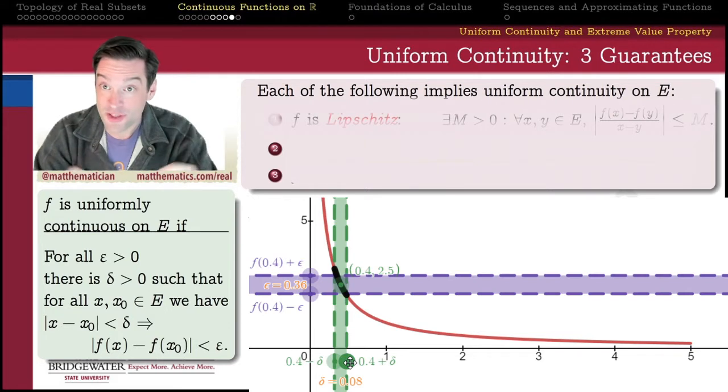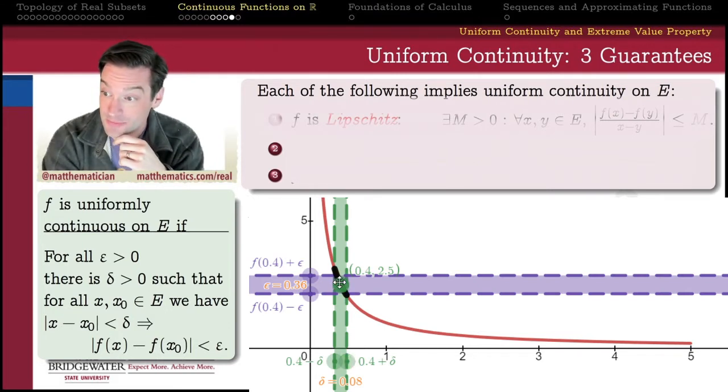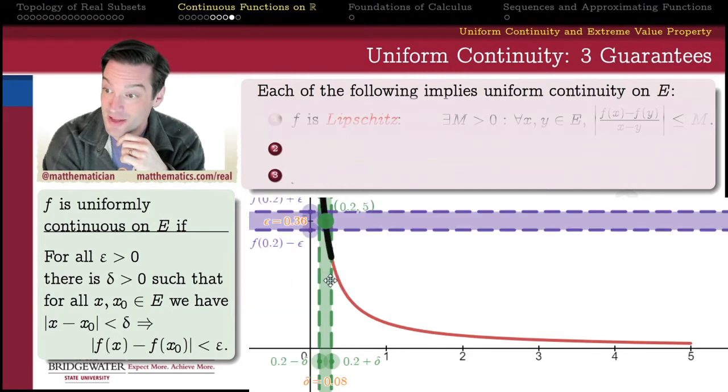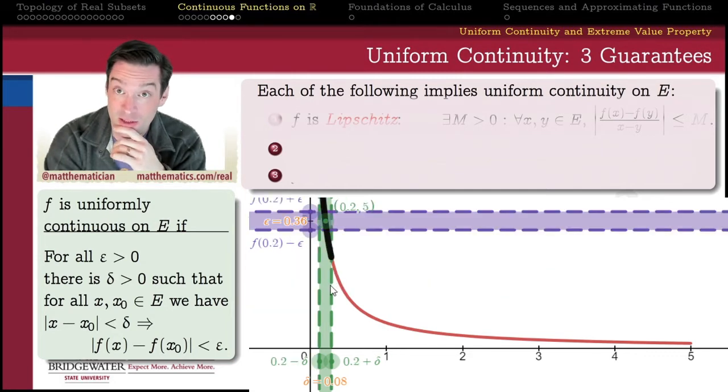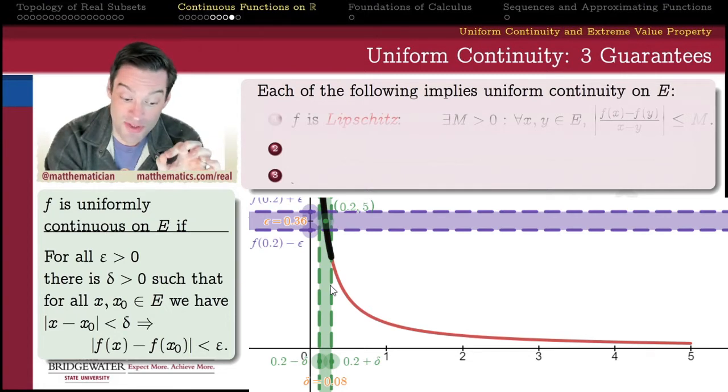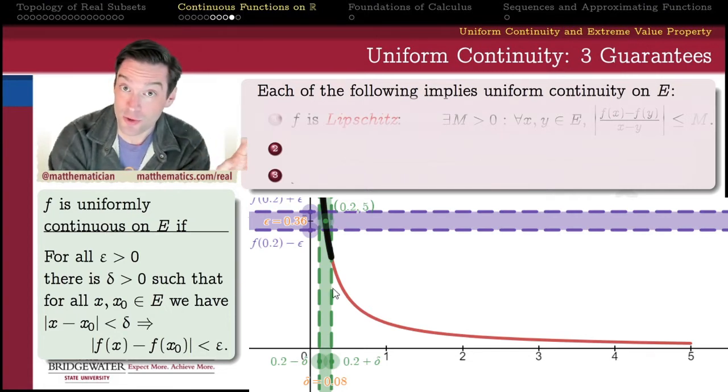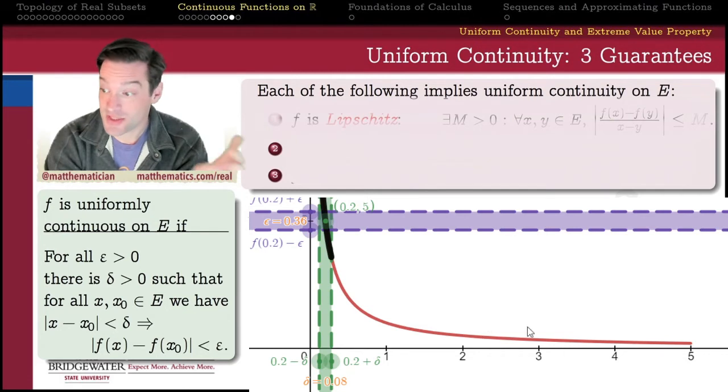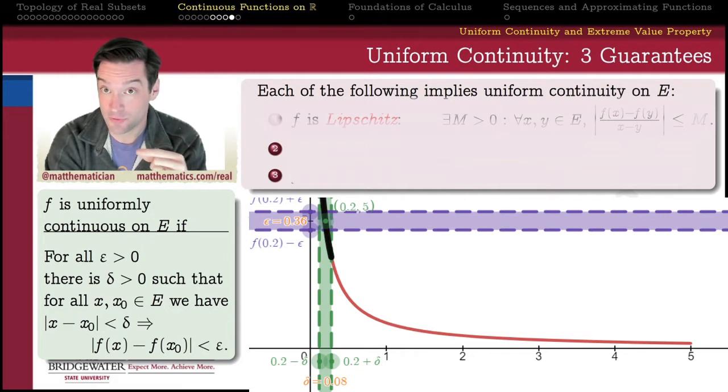And so all of the different deltas that are associated with the different x's in my domain, those deltas get smaller and smaller and smaller. And the closer that we get to that vertical asymptote for this function, those deltas get arbitrarily closer to zero. And as we're going to see, this is the problem that is going to motivate us to find a particular kind of solution to this lack of uniform continuity.